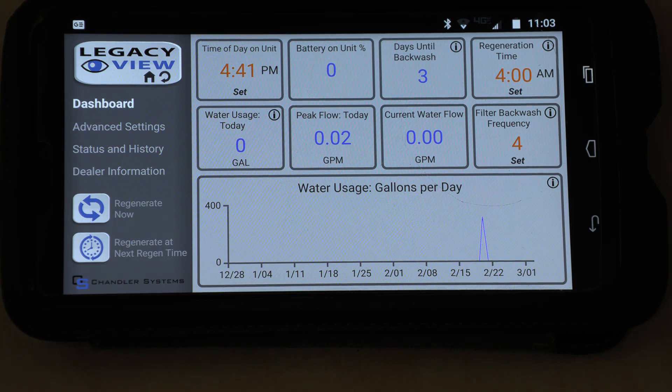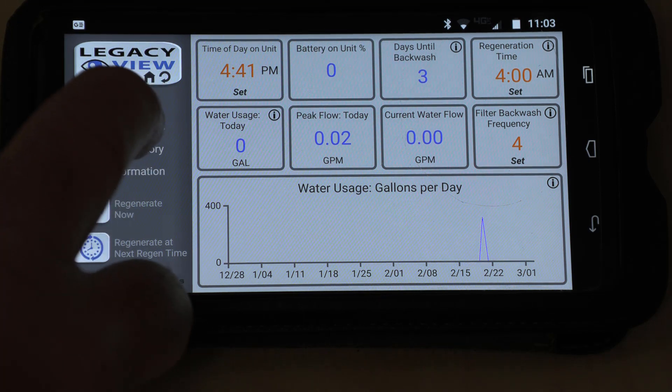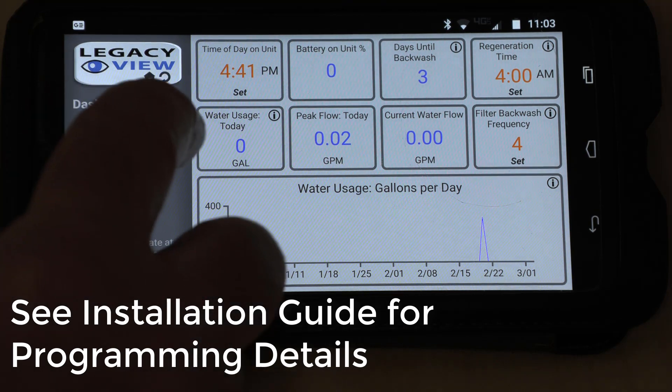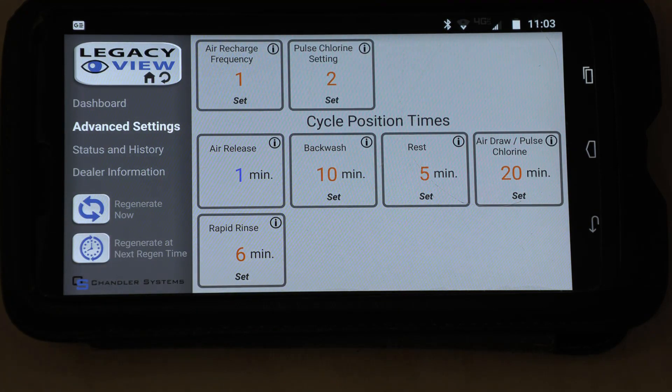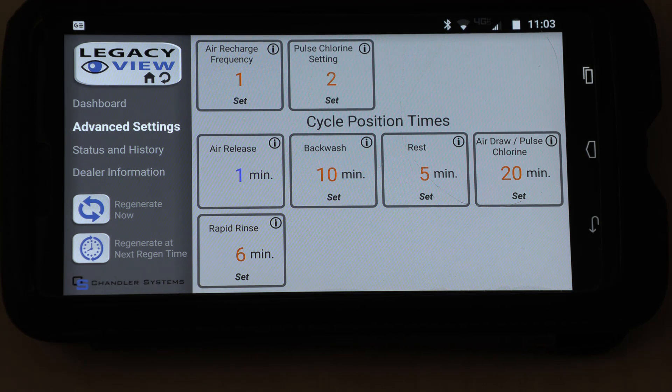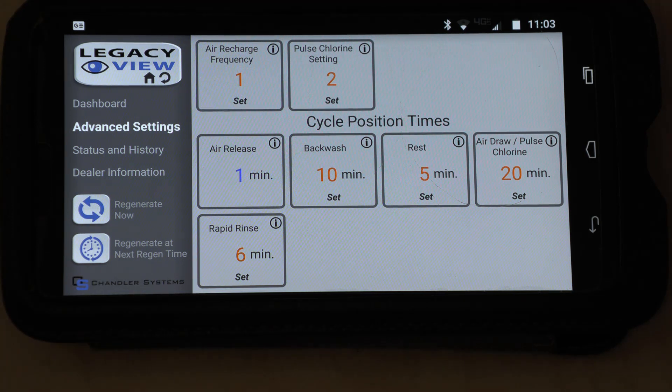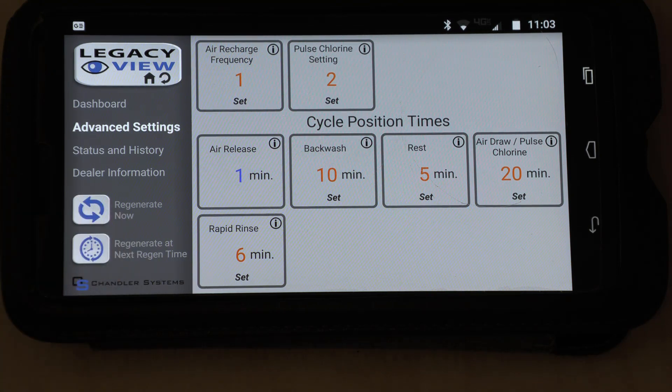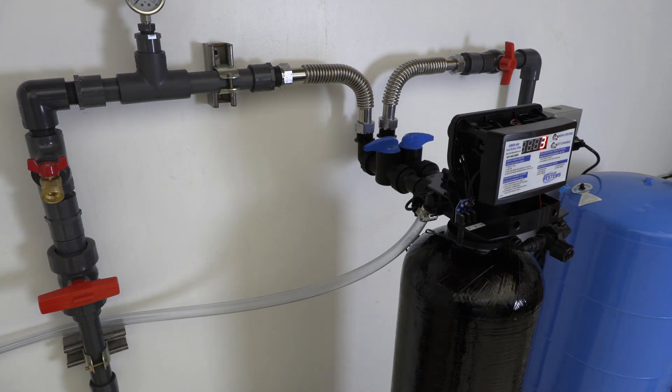Basically it has the regeneration times and all of your settings. There's also an advanced setting where you can go in and actually look at the cycle times and your flows and things like that. So anyway, for this what we're going to do is go ahead and regenerate.